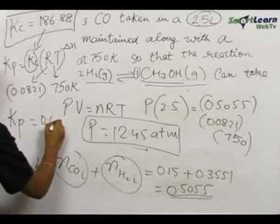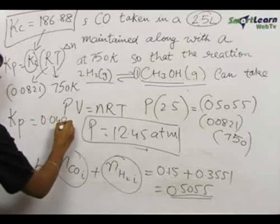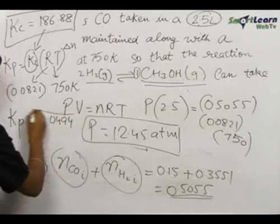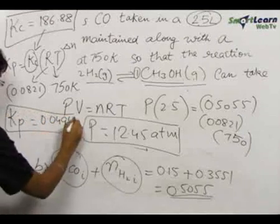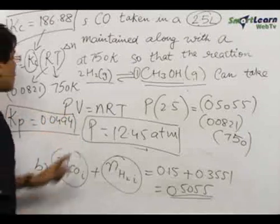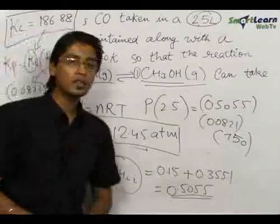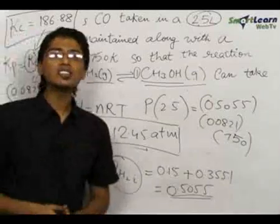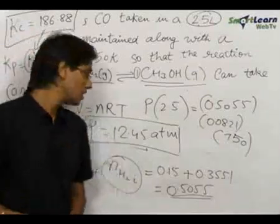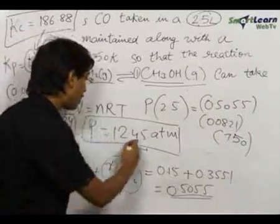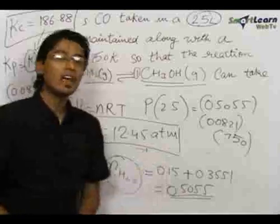Hence our final answers are: Kc = 186.88, Kp = 0.0494, and the final pressure at equilibrium when no catalyst is involved is 12.45 atmospheres.